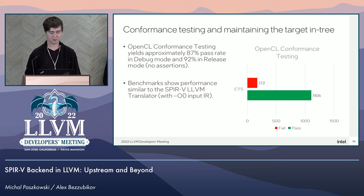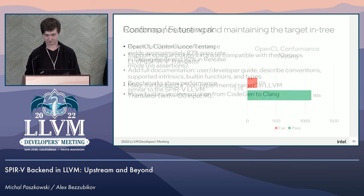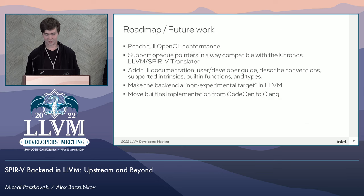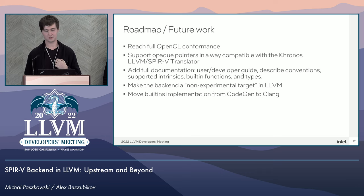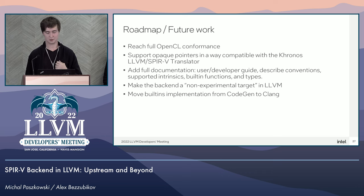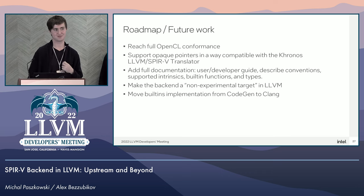The current runtime OpenCL testing yields approximately 87% pass rate in debug mode and 92% in release mode. We have also compared the performance of the backend generated code with the SPIR-V Translator, and it looks to be on par, though the backend supports optimized IR. Our current priority is to reach full OpenCL conformance by the end of this year and subsequently make the backend a permanent, non-experimental target in LLVM.